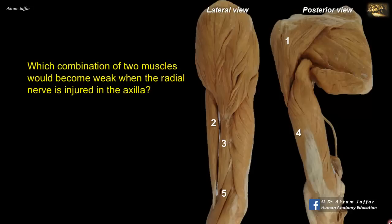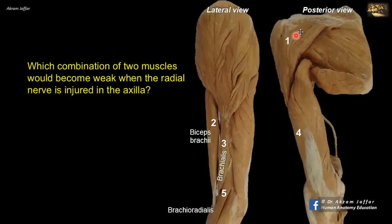Let's first identify the muscles. This is a lateral view, showing anteriorly the biceps muscle and the brachialis muscle. Both are located in the flexor compartment of the arm. Brachialis is deeper to the biceps muscle. Here, on the lateral side, is a muscle extending from the humerus, crossing the elbow. From the lateral side of the humerus, it is the brachioradialis muscle. One is the deltoid muscle, and here we can see the posterior fibers of deltoid, showing its shape from the lateral and posterior sides.